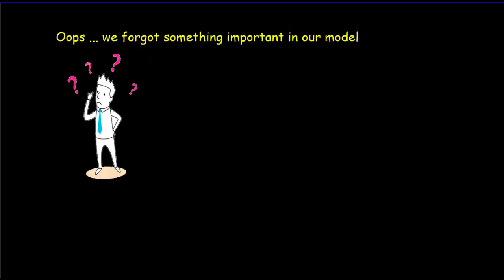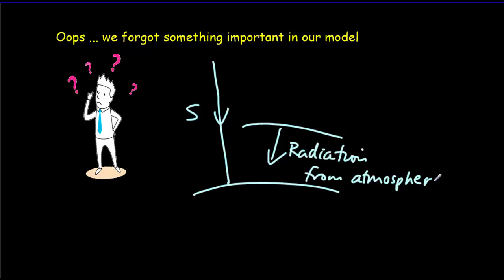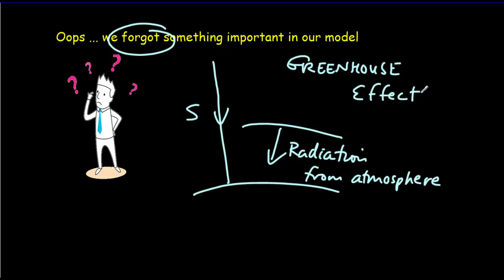So if we want our prediction for the temperature to be the actual surface of the Earth and not the temperature somewhere in the atmosphere, then we forgot something really important in our model. We took into account the solar radiation coming in, but we haven't taken into account that there's going to be radiation coming from the atmosphere because of the greenhouse gases. We forgot the greenhouse effect, and we're going to take that into account in the upcoming problems.